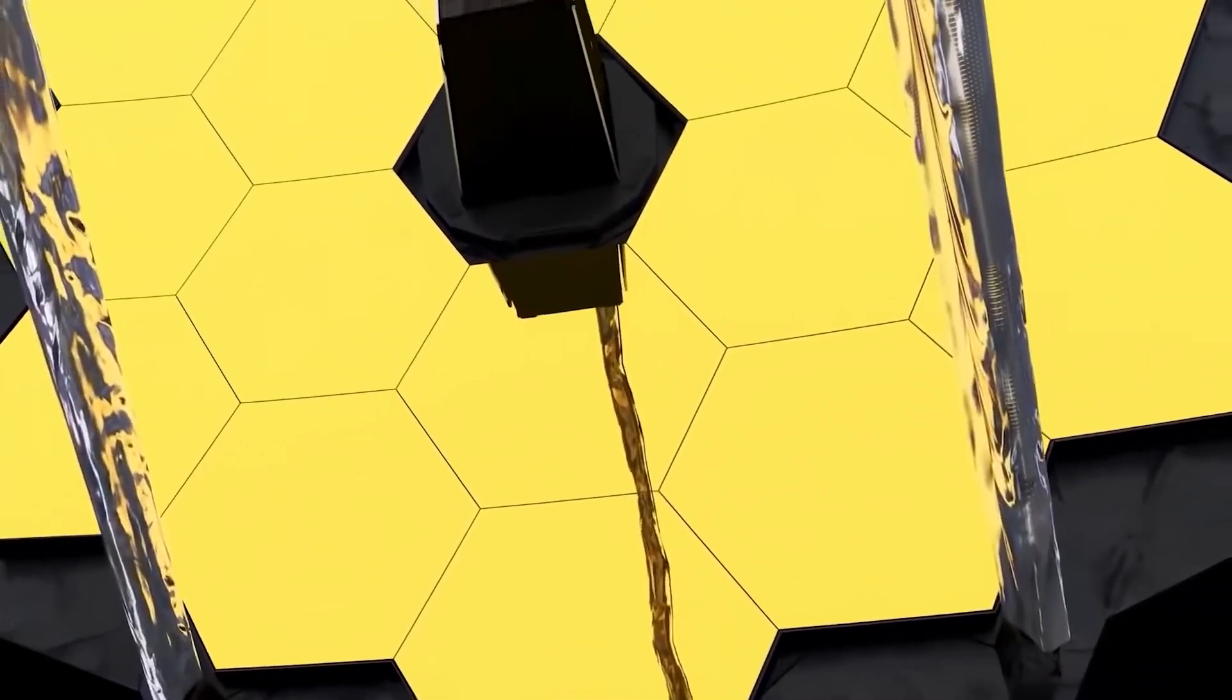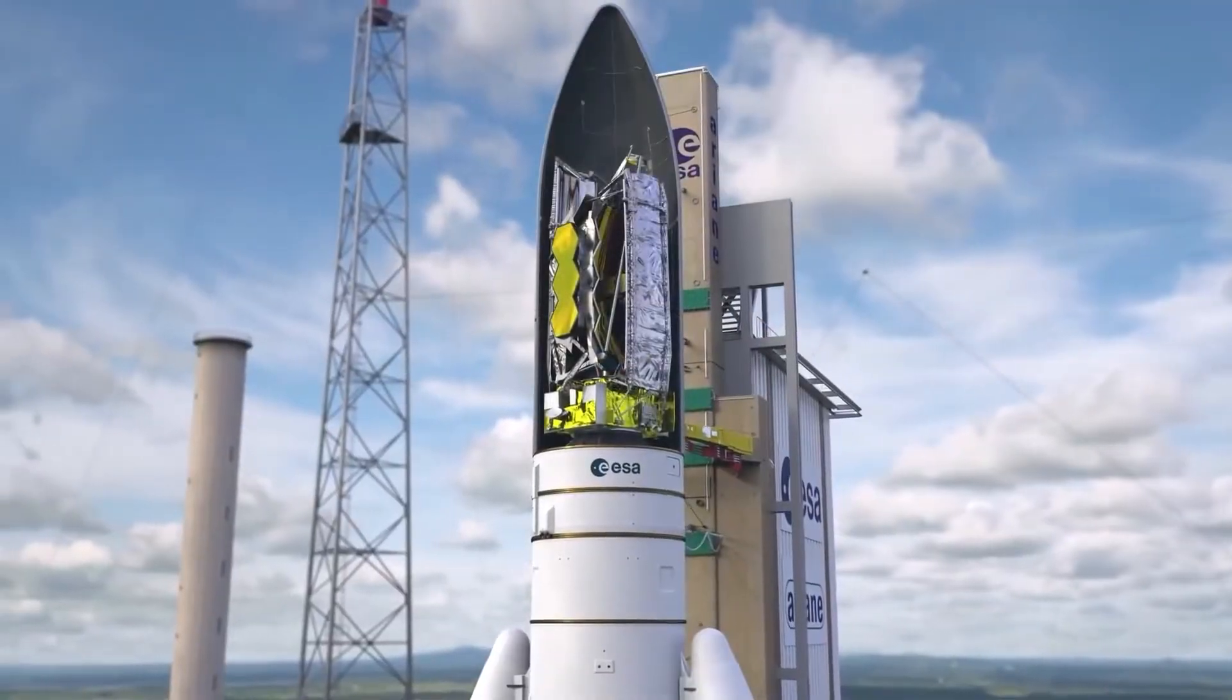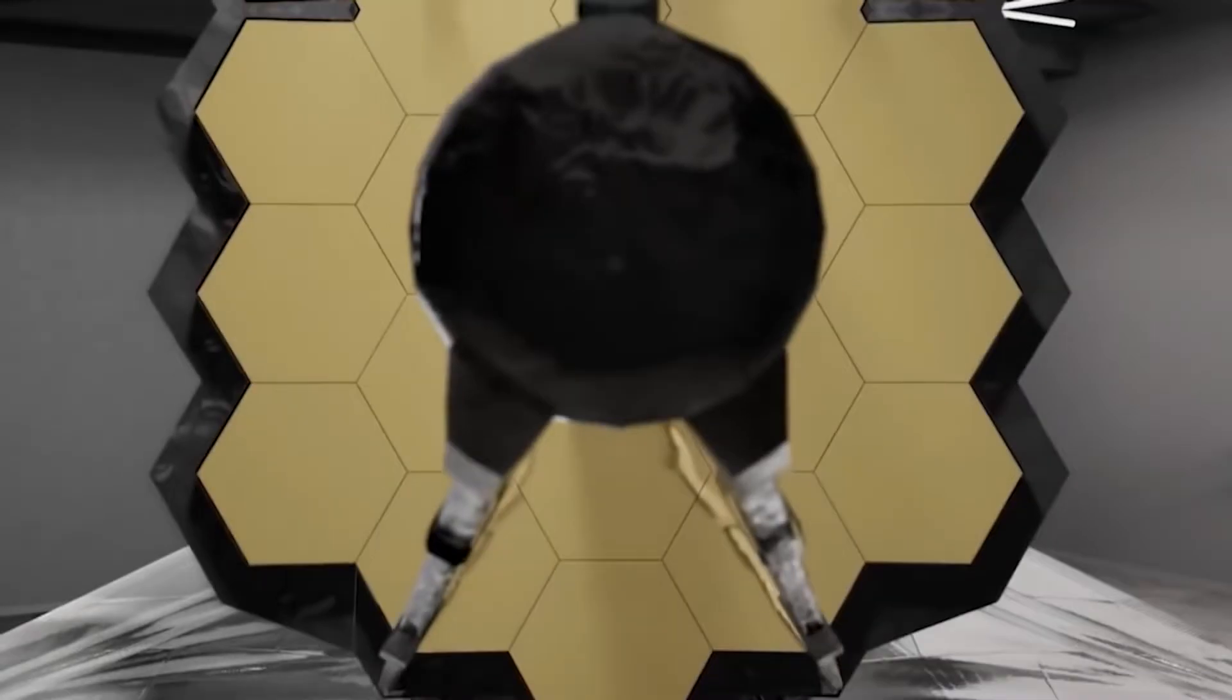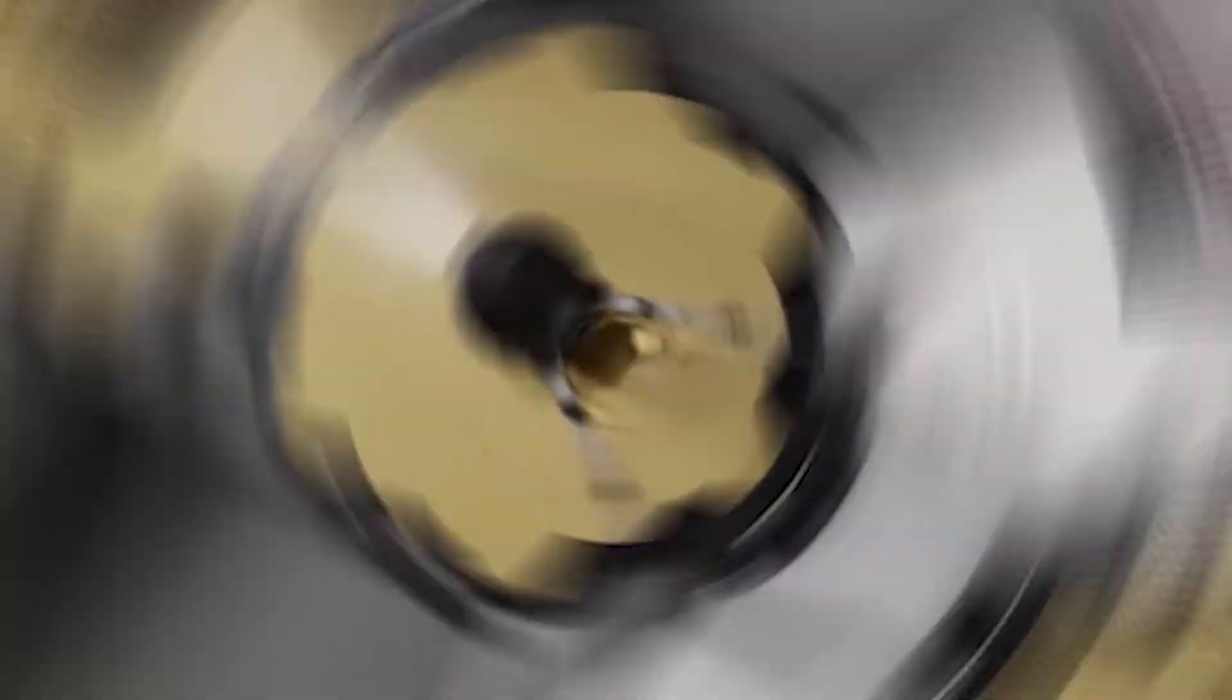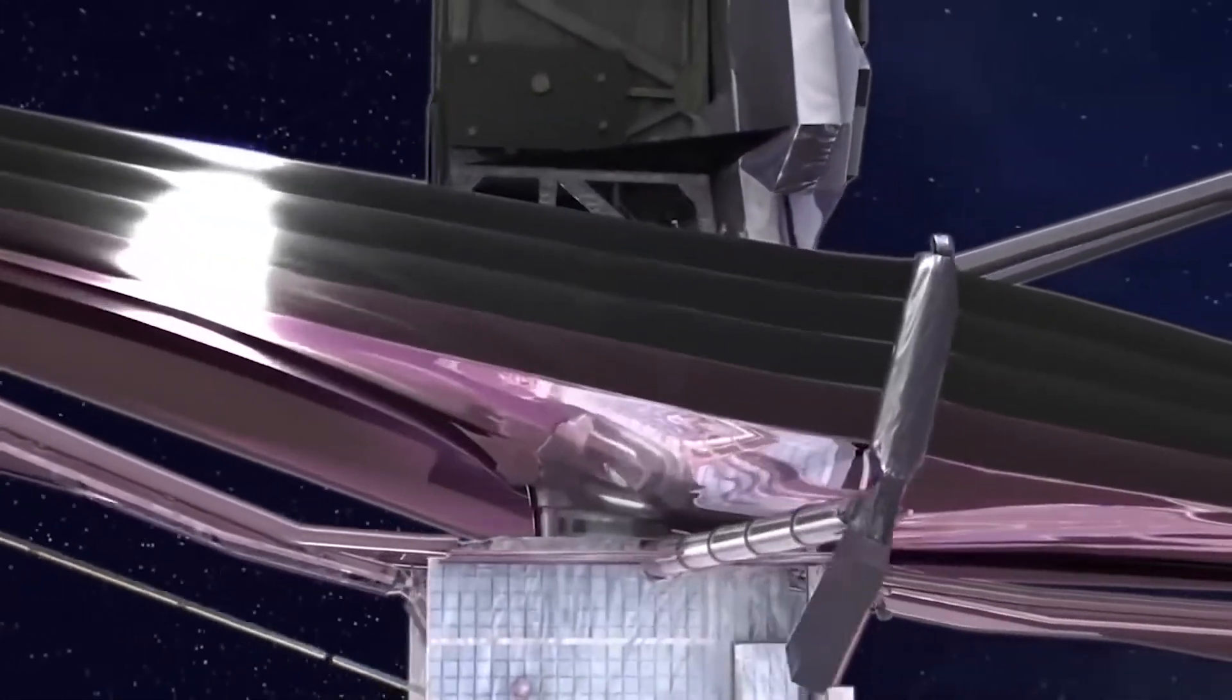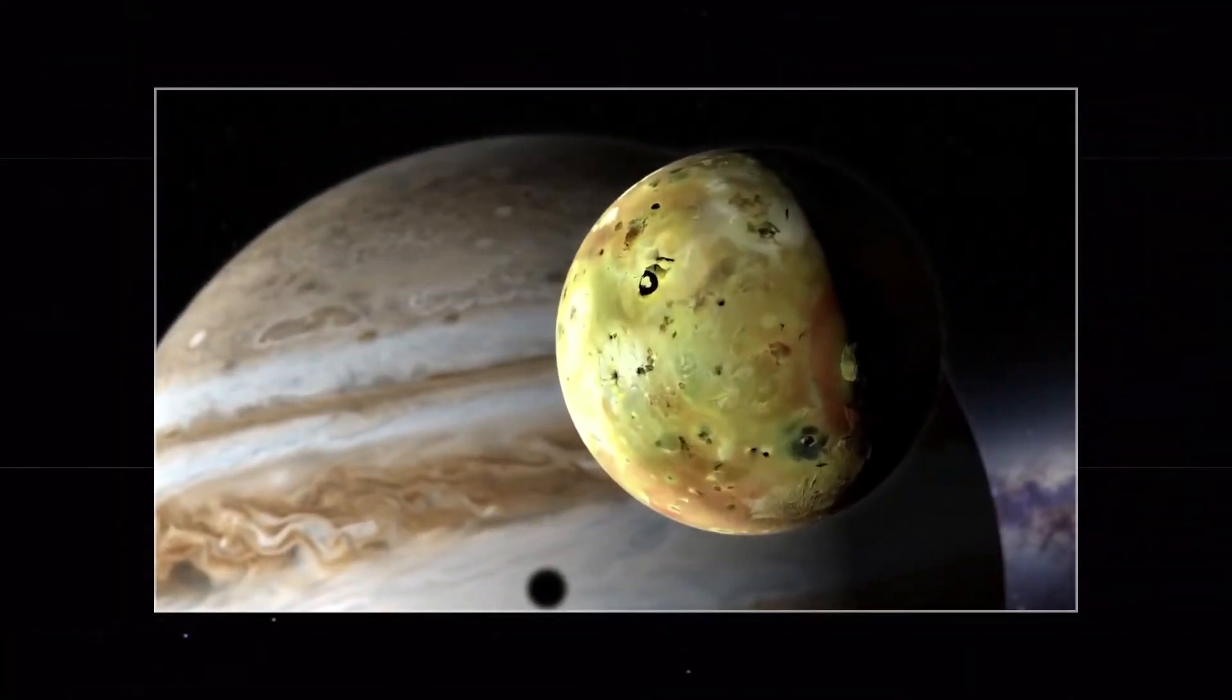But first, Webb had to be curled up to fit into the rocket's fairing with its 6.5-meter primary mirror and tennis court-sized solar concentrator and was only deployed step-by-step during the first two weeks of its operation. Nevertheless, we're expecting the James Webb Space Telescope to take decent photos of space.